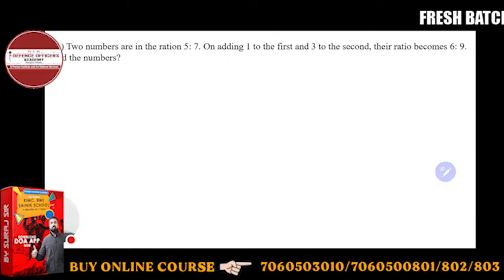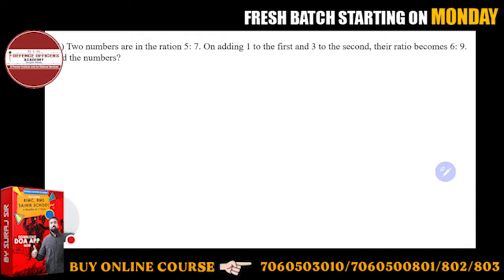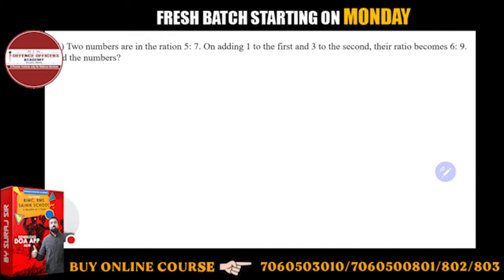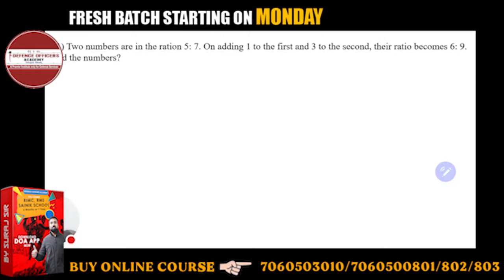Two numbers are in the ratio 5 to 7. On adding 1 to the first and 3 to the second, their ratio becomes 6 to 9. You have to find the numbers.